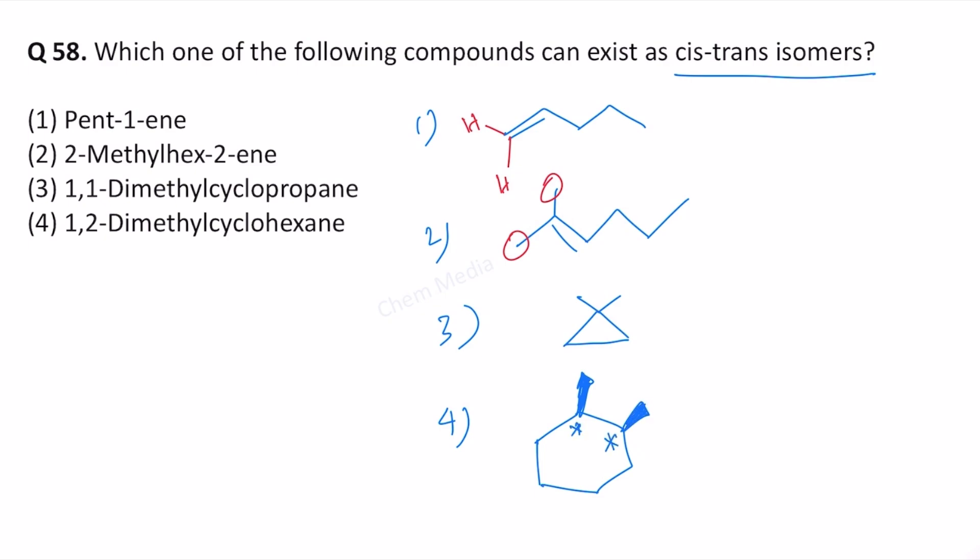Here is one chiral center. Here is another chiral center. Here we have a mirror plane. The molecule has an inherent plane of symmetry. Therefore, this is optically inactive meso compound. So this is cis because both the methyl groups are on the same side.